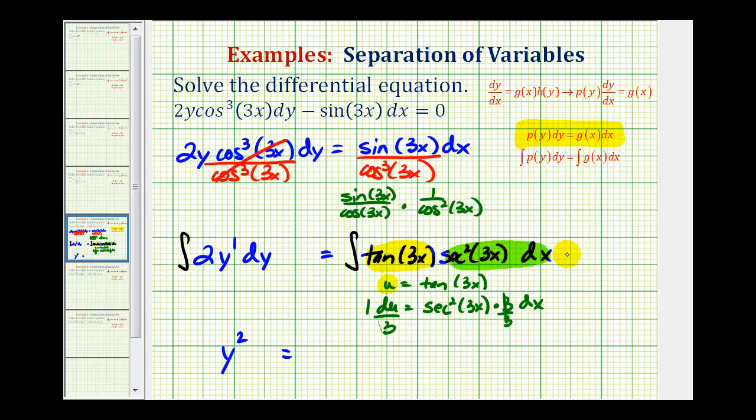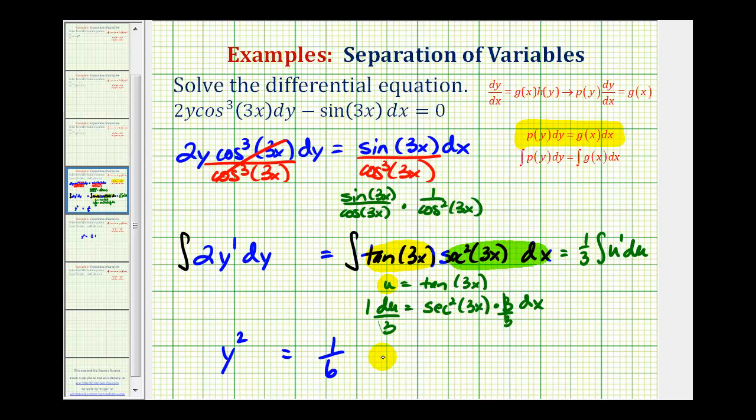So if we wrote this in terms of u, we'd have 1 third times the integral of just u du. So we'd have 1 third times the integral of u to the first, which would be u squared divided by 2, or just 1 half u squared. 1 third times 1 half is 1 sixth. And then for u squared, since u is equal to tangent 3x, we'd have tangent squared 3x plus our constant of integration.